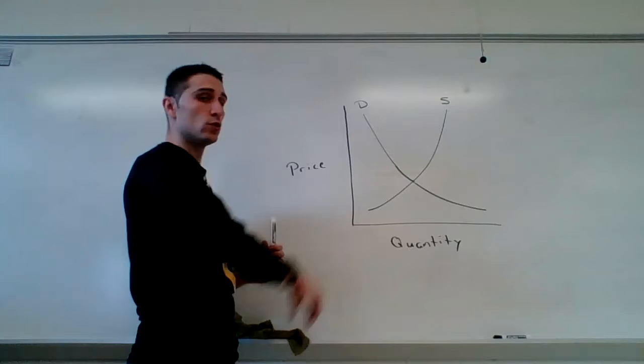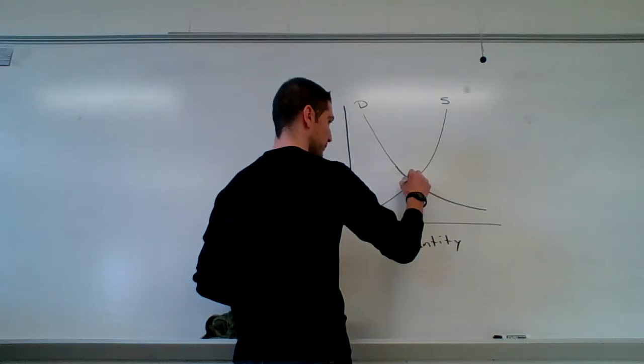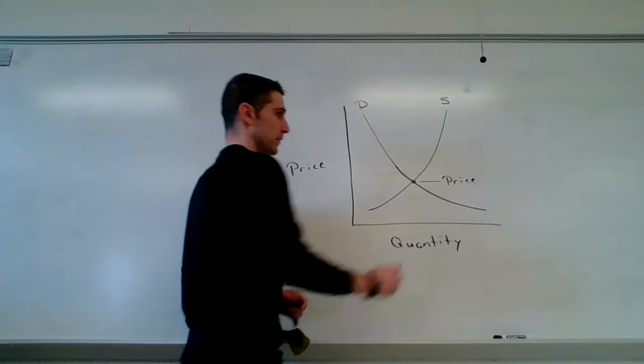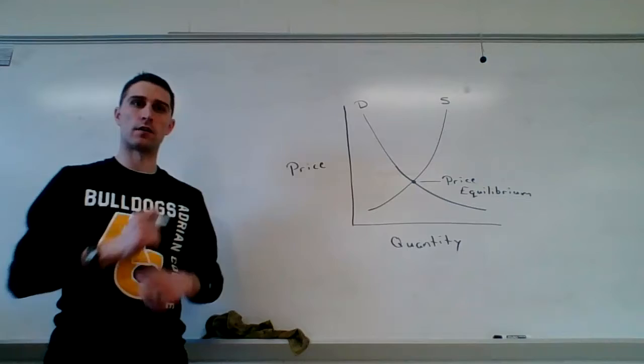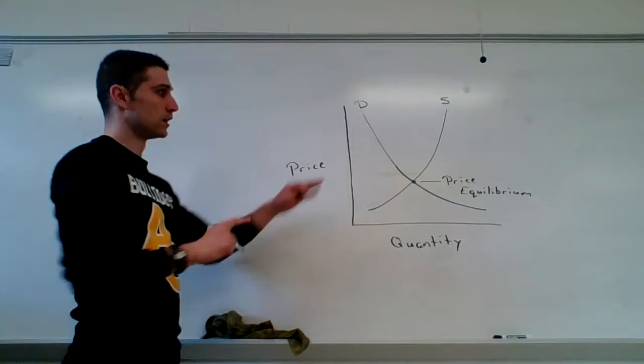Now, when we put the two graphs together, this is the new concept. And what I want you guys to understand is this point right here. This is called price equilibrium. And it is the point at which quantity supplied and quantity demanded are the same. It is efficient. And the key point is efficiency because, remember, the problem we are trying to solve with economics is scarcity.